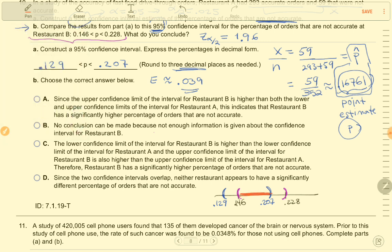So they overlap, they overlap a bit right in here. Since they overlap, we could not say that restaurant A and restaurant B have significantly different rates of inaccurate orders. They might have about the same as what this indicates. So let's figure out which one of these answers says that.